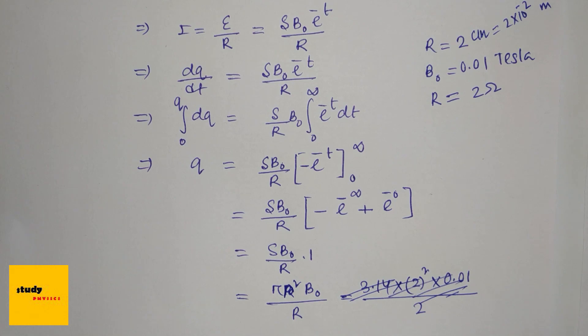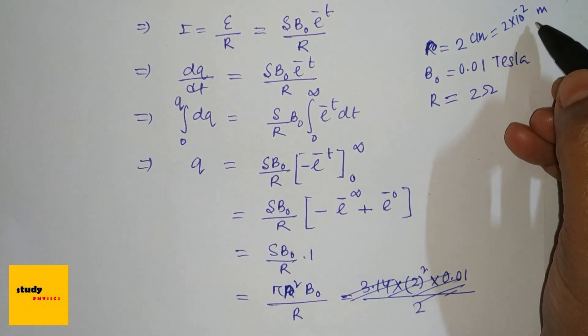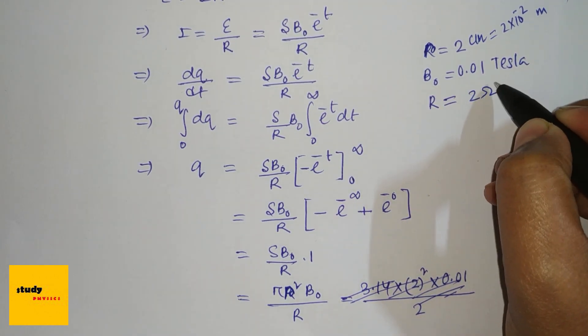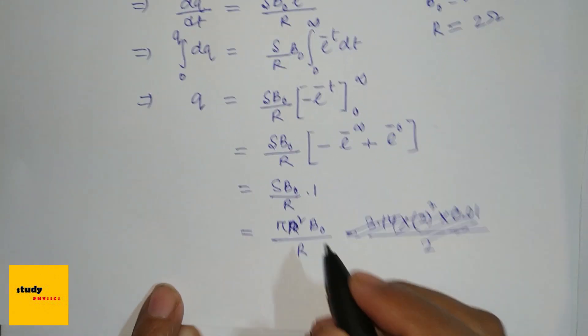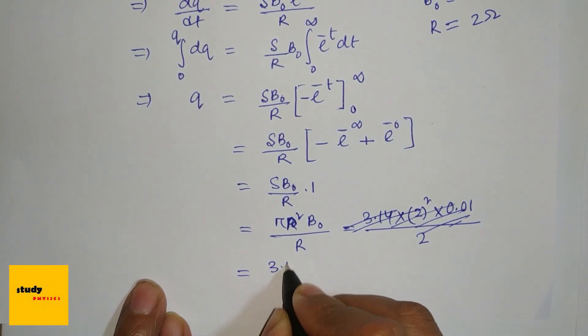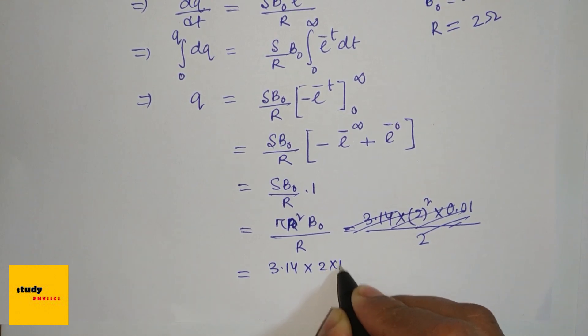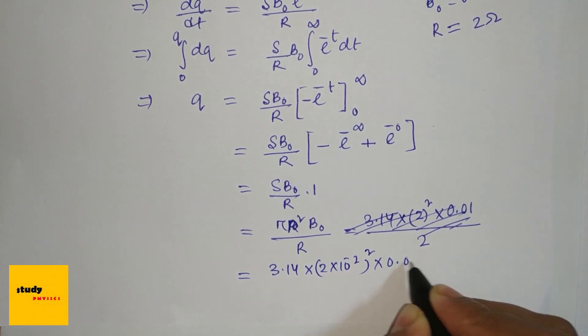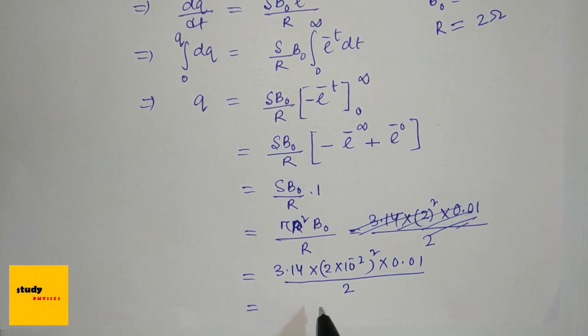Here radius is 2 cm = 2×10^(-2) meters, B₀ = 0.01 Tesla, and resistance R = 2 ohm. Putting these values: 3.14 × (2×10^(-2))² × 0.01 / 2. After calculating, this value would be 6.28×10^(-6) coulombs, which is 6.28 micro coulombs.